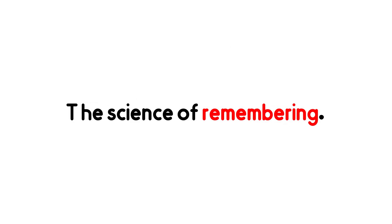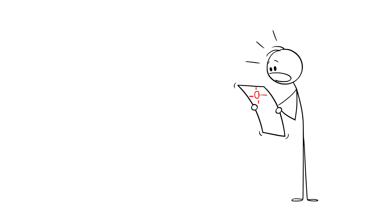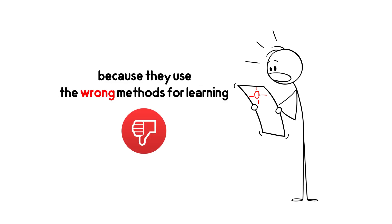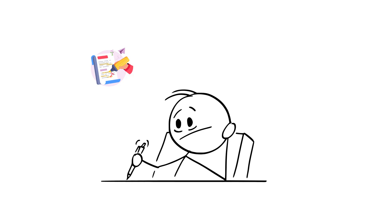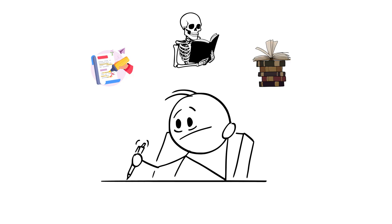So let's break the system down scientifically. The science of remembering. Most people don't fail exams because they're stupid. They fail because they use the wrong methods for learning. Highlighting, rereading, flipping through pages aimlessly, none of them help your brain retain information.